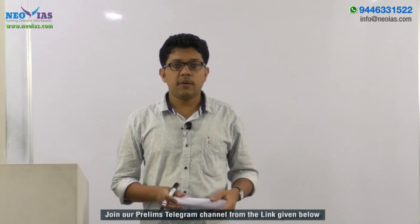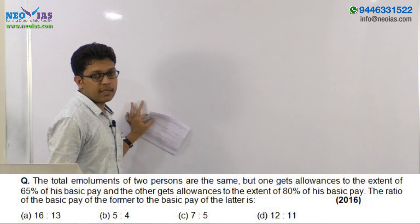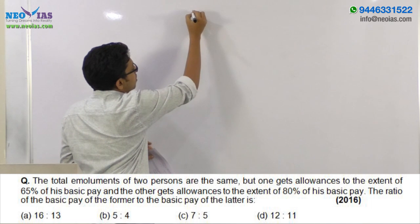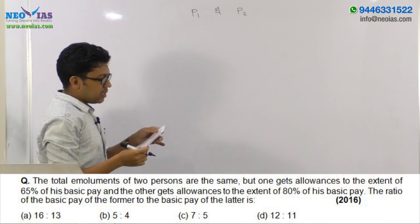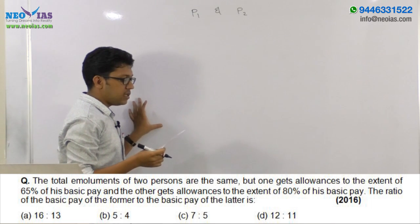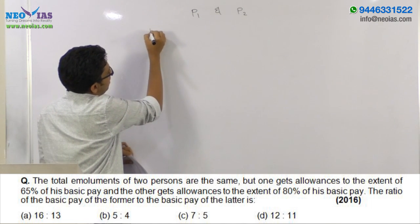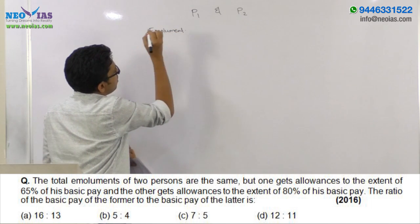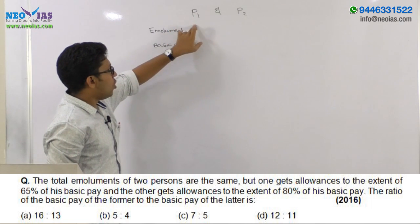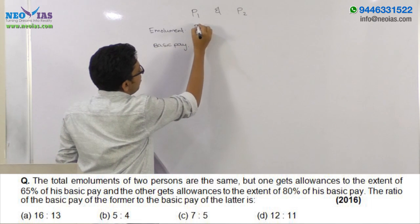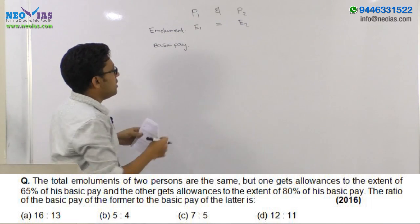Today we are going to solve two questions from percentage and one question from profit and loss. In the first question, total emoluments of two persons are the same. We can name the two persons as P1 and P2. One gets allowances to the extent of 65% of their basic pay and the other gets allowances to the extent of 80% of their basic pay. So two quantities are involved: their emoluments (enhanced salary) and their basic pay. Their total emoluments are same, that is E1 equals E2, and the difference is in their basic pay.